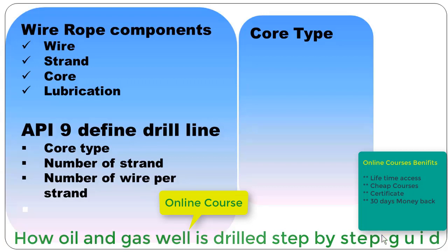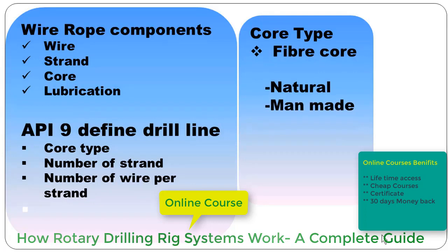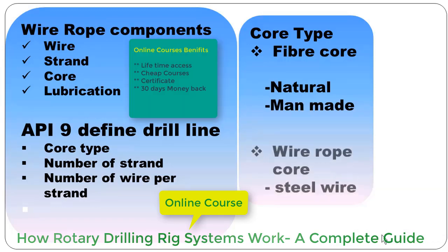The first one is fiber core. It can be natural or artificial, or we can say man-made. Another type of core is wire rope core, for example steel wire.